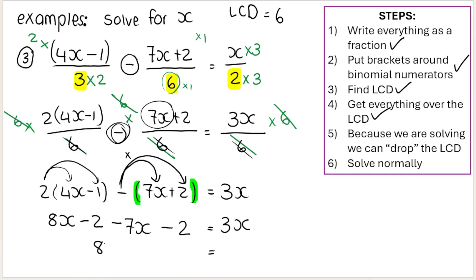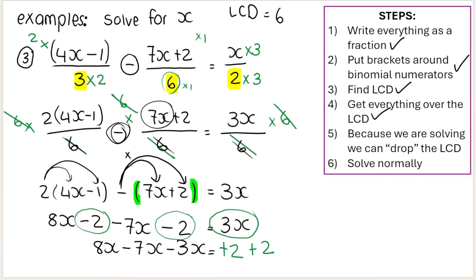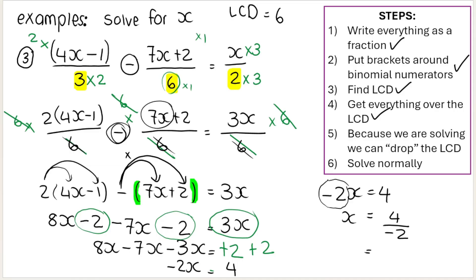Now get the x's to one side. I've got 8x here and negative 7x over here. The inverse operation of plus 3x is subtract 3x. The inverse operation of negative 2 is plus 2 on both sides. So on the left-hand side: 8 minus 7 minus 3 gives negative 2x, and 2 plus 2 is positive 4. So negative 2x equals 4. The inverse operation of multiplying by negative 2 is dividing by negative 2. 4 divided by negative 2 is negative 2. And there we go.